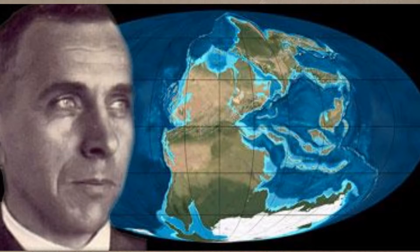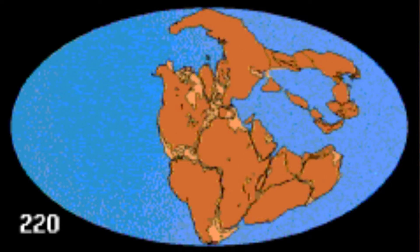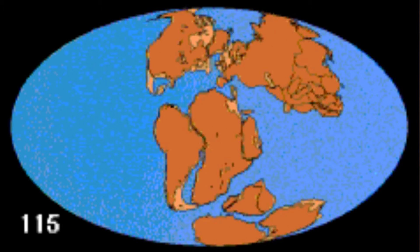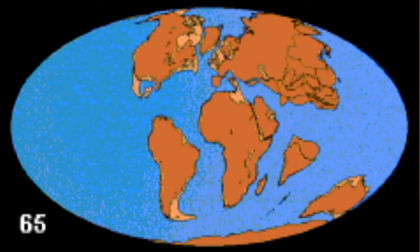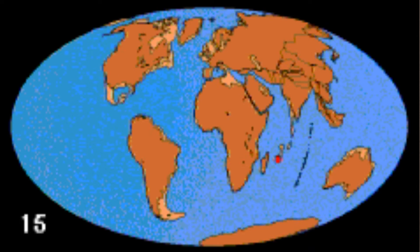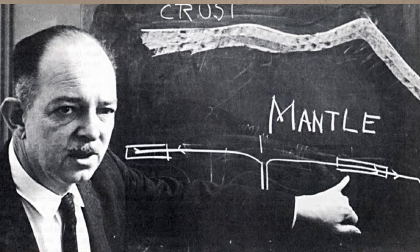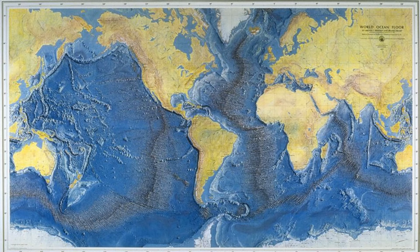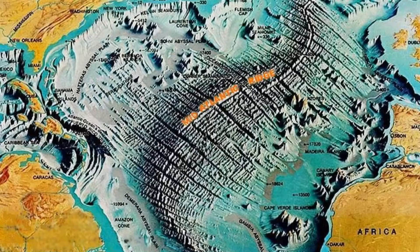We all know that Alfred Wegener was the guy who came up with the idea of continental drift, and nobody believed him until around World War II. Harry Hess was then able to use sonar equipment and he mapped the ocean floor. Previously people thought that it was kind of flat, but guess what — it wasn't.